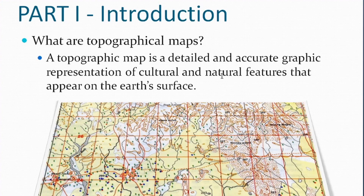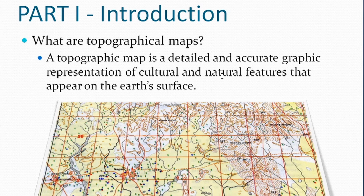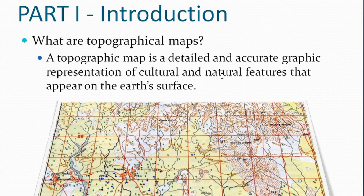In part one, introduction first: what are topographical maps? Sometimes they might ask you the definition, sometimes they might not, but it's always better to know. A topographic map is a detailed and accurate graphic representation of cultural and natural features that appear on the earth's surface. It is a depiction of a place. Now if you remember, there are two types of maps — large scale and small scale. Your topographic map is a large scale map, so a small area is shown with great detail.